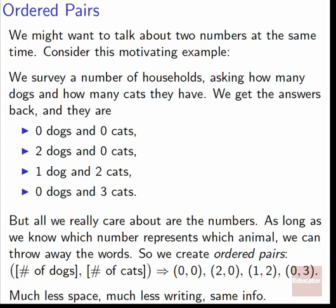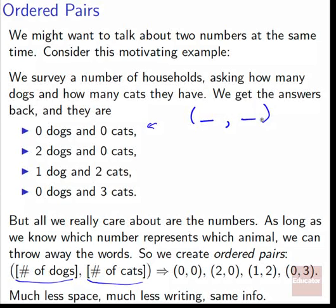We can create ordered pairs, because we have to know what order the numbers came in — did dogs go first or cats? We set up an arbitrary order: dogs go first, cats come second. Then we can convert all the words into just (0,0), (2,0), (1,2), (0,3). This takes much less space, much less writing, same info. An ordered pair is parentheses, number, comma, number, close parentheses — just numbers going in those blanks.